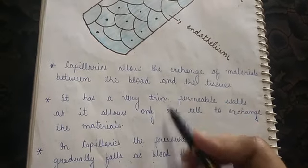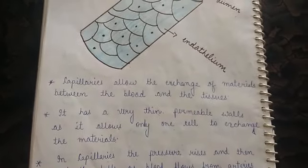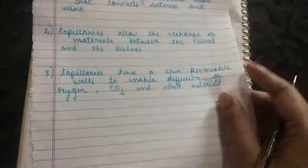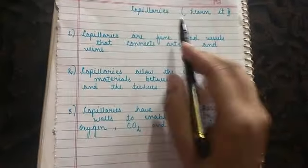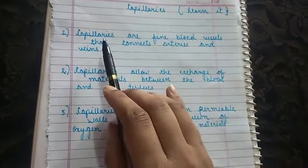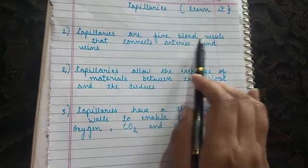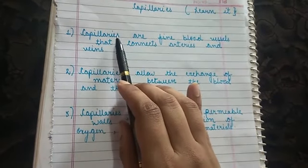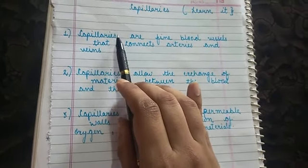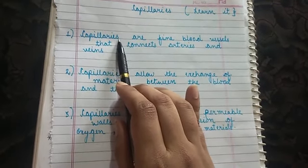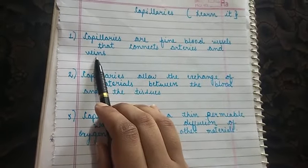So these are the three functions performed by capillaries, and students you have to learn them. First of all, capillaries are fine blood vessels that connect arteries and veins. You can say that it is a connective tissue between arteries and veins.